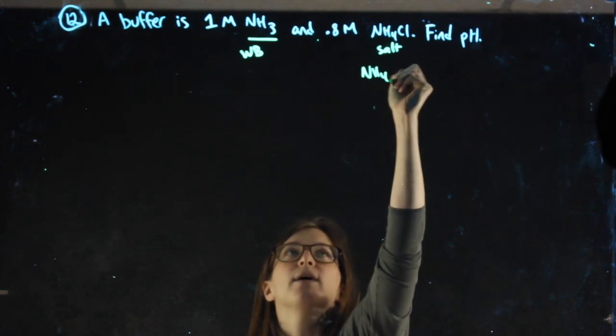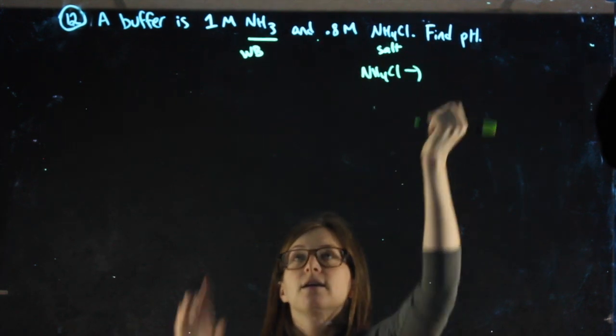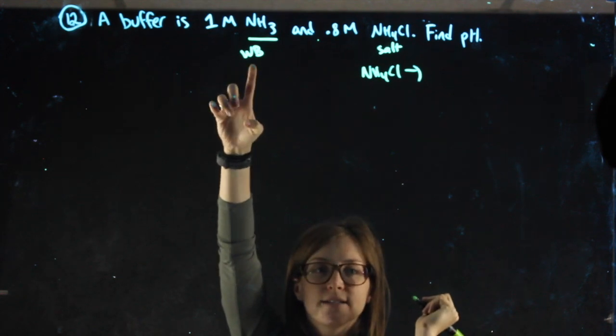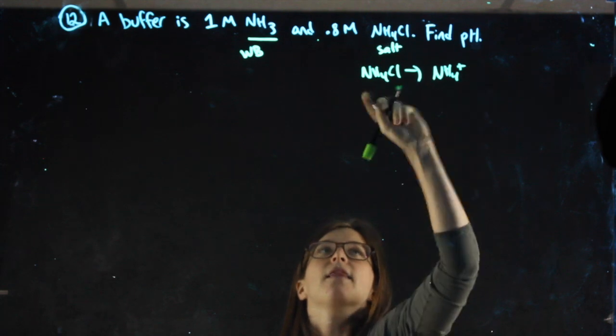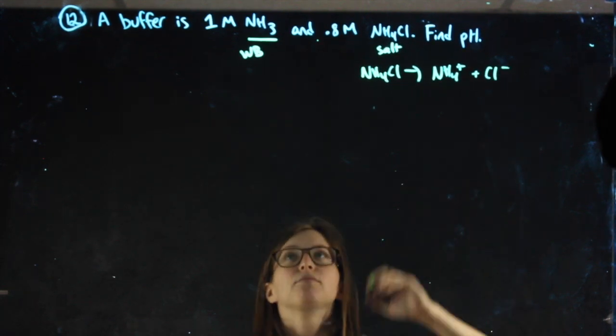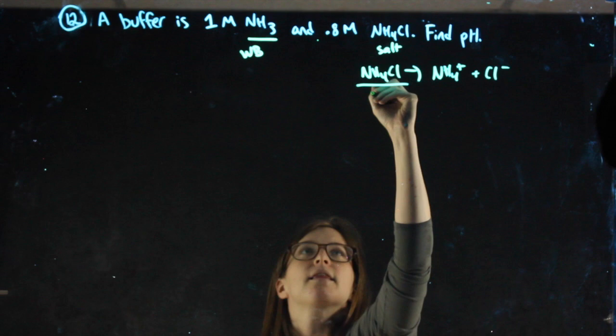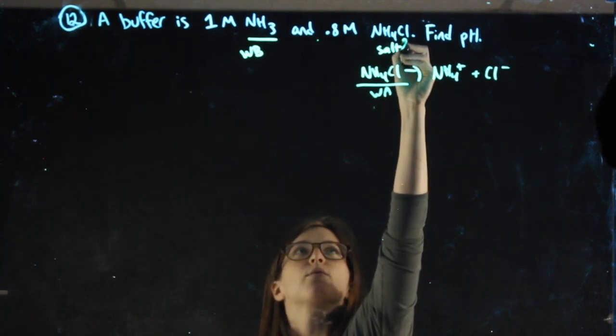That can also give you a hint as to how to dissociate it. I know I need the conjugate weak acid to this, so I know I need NH4, therefore Cl must be left over. That's my weak base, this is my weak acid, sorry the salt was that one.